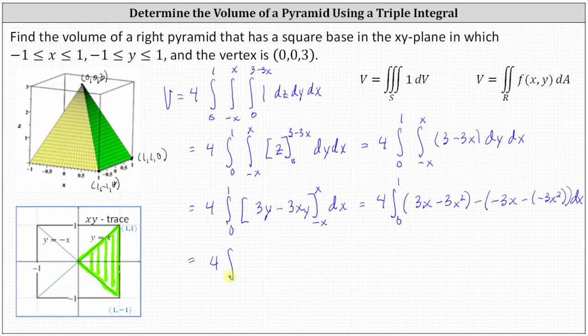Simplifying, we have 3x + 3x, which is 6x, then negative 3x² minus 3x², which gives us minus 6x². So the result of the y-integration is 6x − 6x².